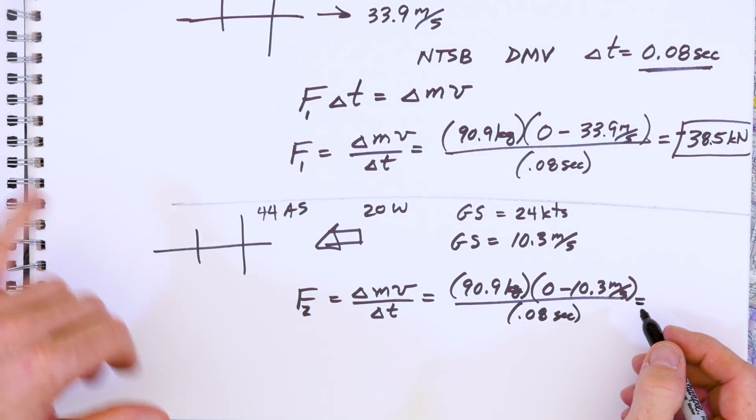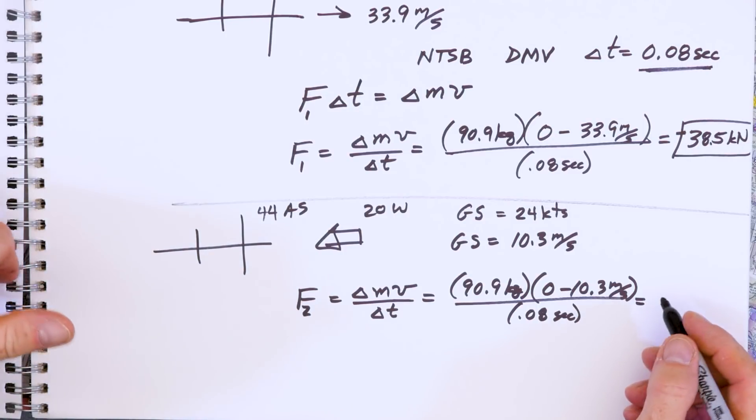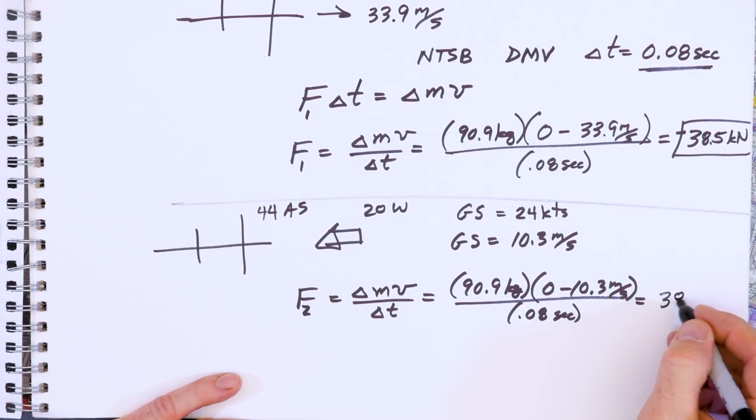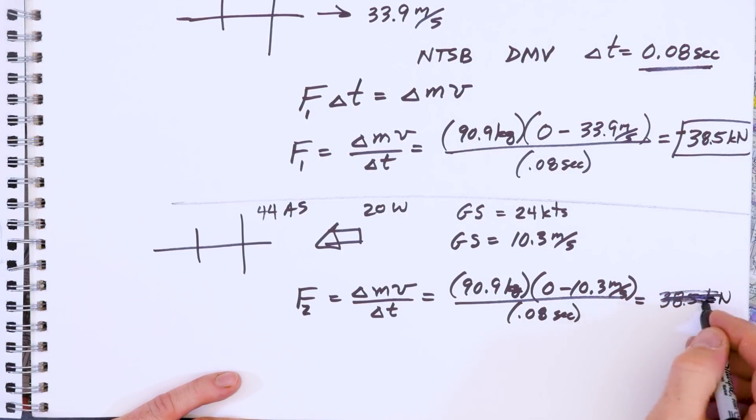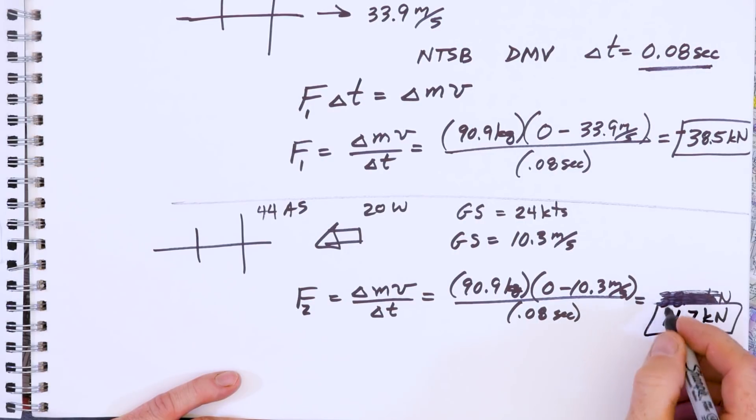And you crunch these numbers and you get an answer of 38.5 kilonewtons. Oops, excuse me. I'm looking at my notes wrong again. Sorry. 11.7 kilonewtons. So about one fourth of the force on your body.